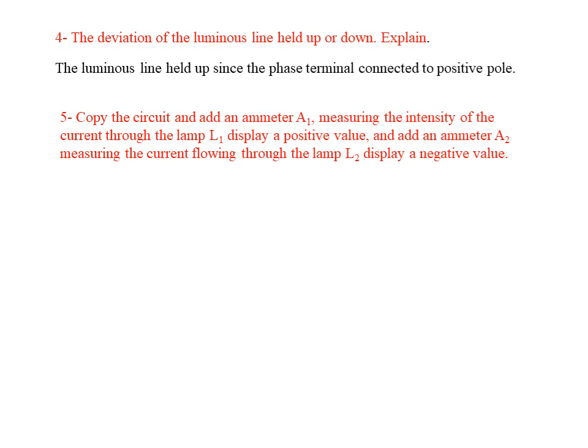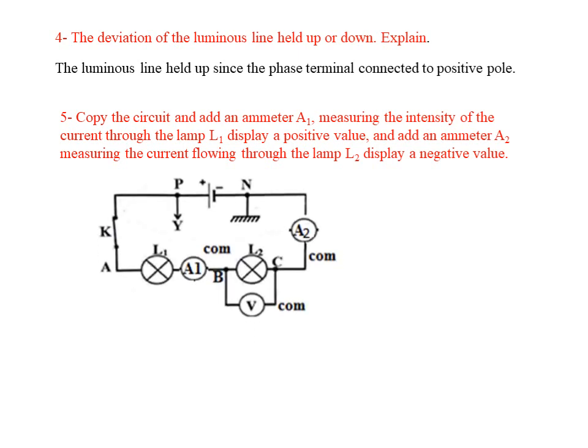Now copy the circuit and add ammeter A1 across lamp L1, indicating a positive value, and ammeter A2 across lamp L2, indicating a negative value. Ammeter A1 is connected in series with L1 with its COM terminal toward the negative pole. Ammeter A2 is also connected in series with L2, with its COM terminal toward the positive pole, since it indicates a negative value.